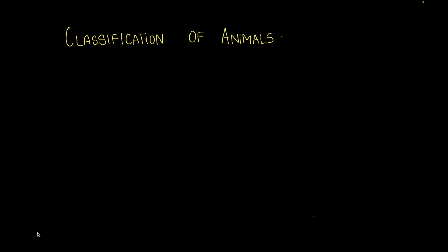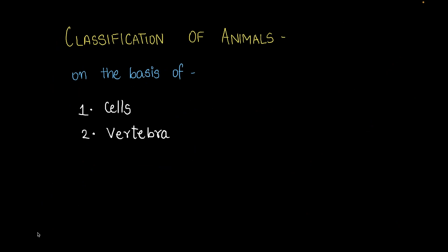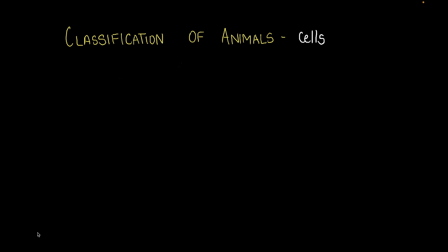We can classify animals on the basis of the number of cells they have, or whether they have a vertebra or not, where they live, and whether they lay eggs or not. Let's get into the first criteria — let's categorize animals on the basis of cells.